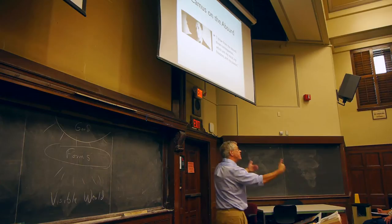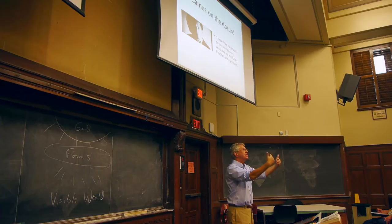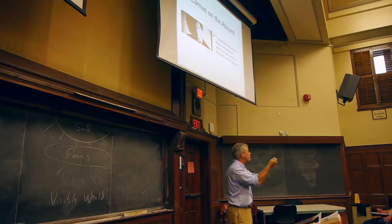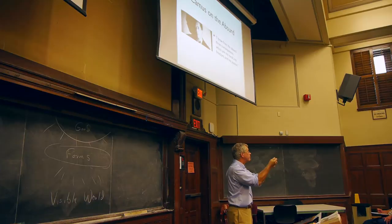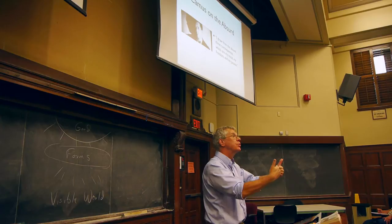And so Camus says, I draw from this three consequences. They are my revolt, my freedom, and my passion. My freedom, because I realize I am absolutely free now to define me however I want. My revolt, because I realize, to the extent that I'm doing that, I'm actually doing something that goes beyond what the world gives me. In fact, it's to some extent in defiance of what the world gives me. The world presents me an absurd, meaningless set of circumstances, and I have to transform them into something meaningful.